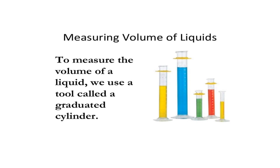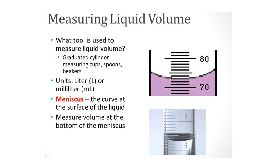How about measuring the volume of liquids? To measure the volume of liquid, we use a tool called a graduated cylinder. There are different sizes of graduated cylinders, each with certain measurement levels. Other tools used to measure liquid volume include measuring cups, spoons, and beakers. The unit used is liters or milliliters. The meniscus is the curve at the surface of the liquid — you need to measure the volume at the bottom of the meniscus.